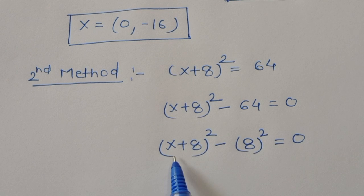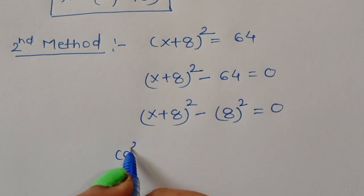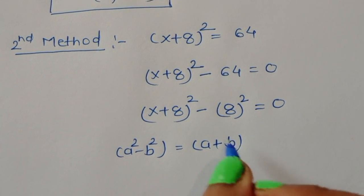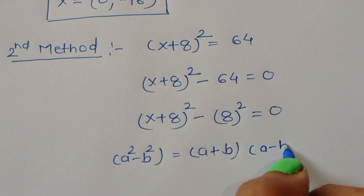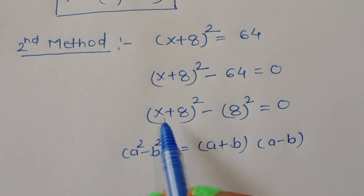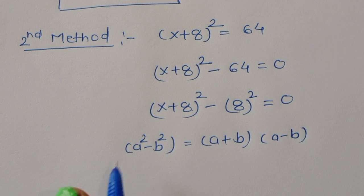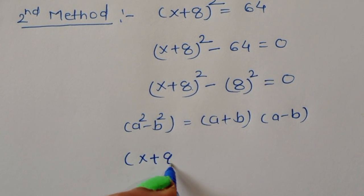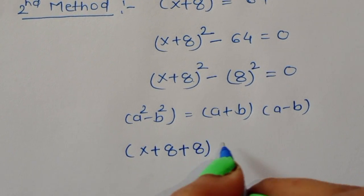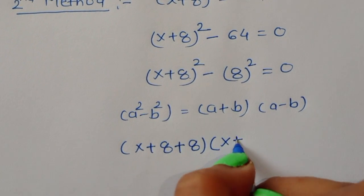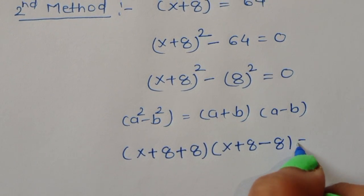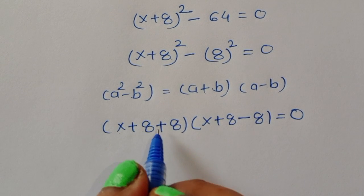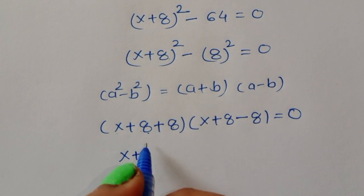We can write 64 in the form of 8 square, so x plus 8 whole square minus 8 square is equal to 0. This is the form of a square minus b square formula, where a square minus b square equals (a + b)(a - b). Here a is (x + 8) and b is 8, so we write (x + 8 + 8) times (x + 8 - 8) is equal to 0.